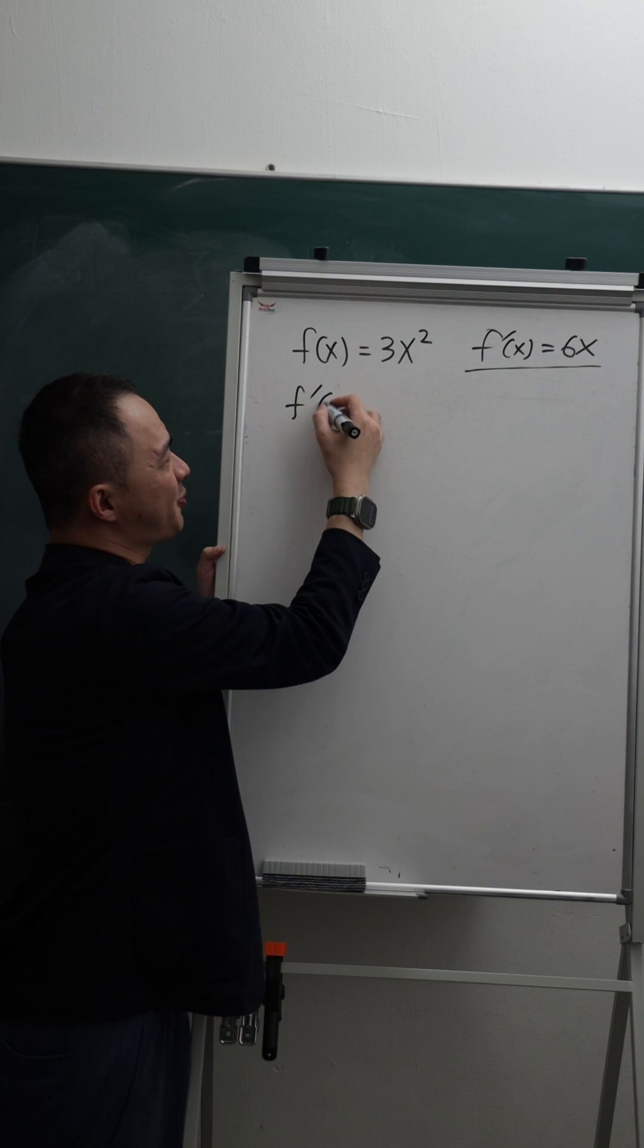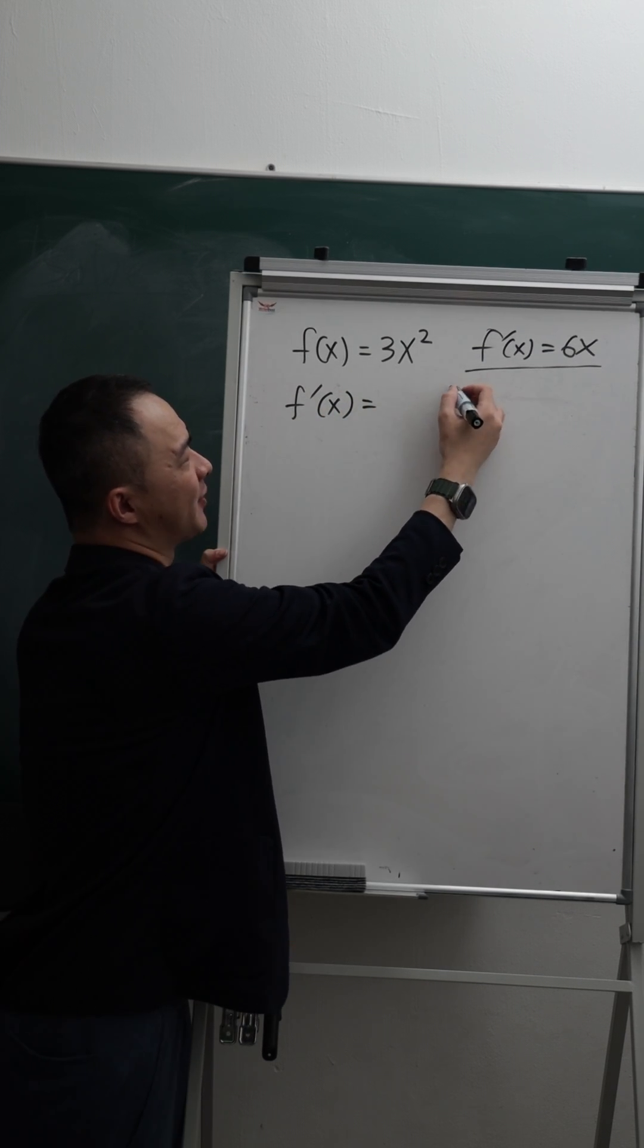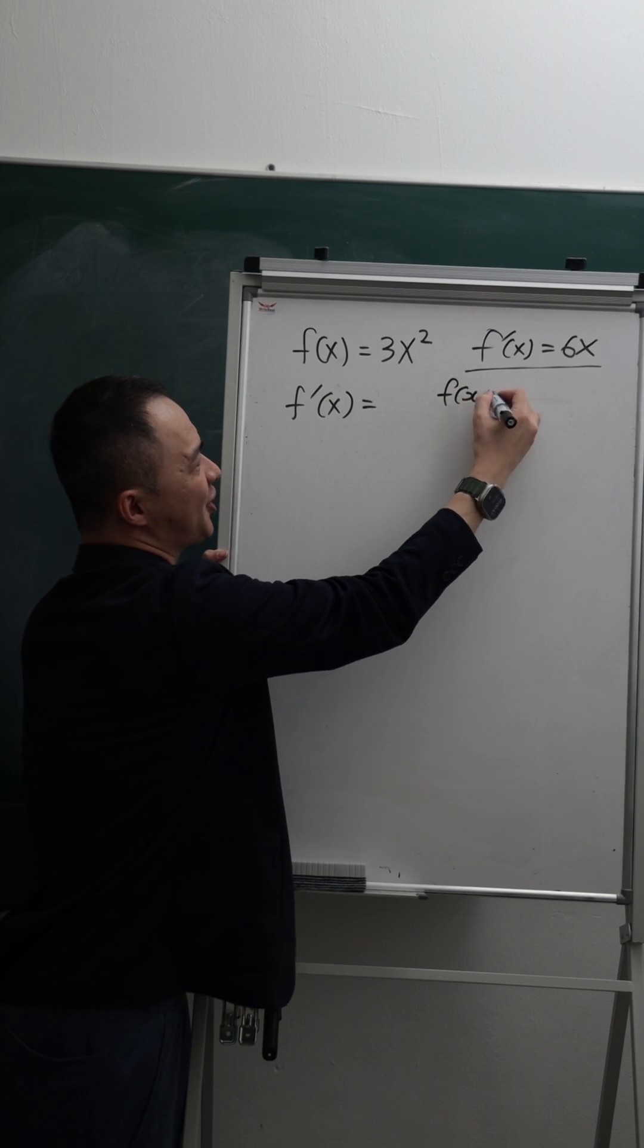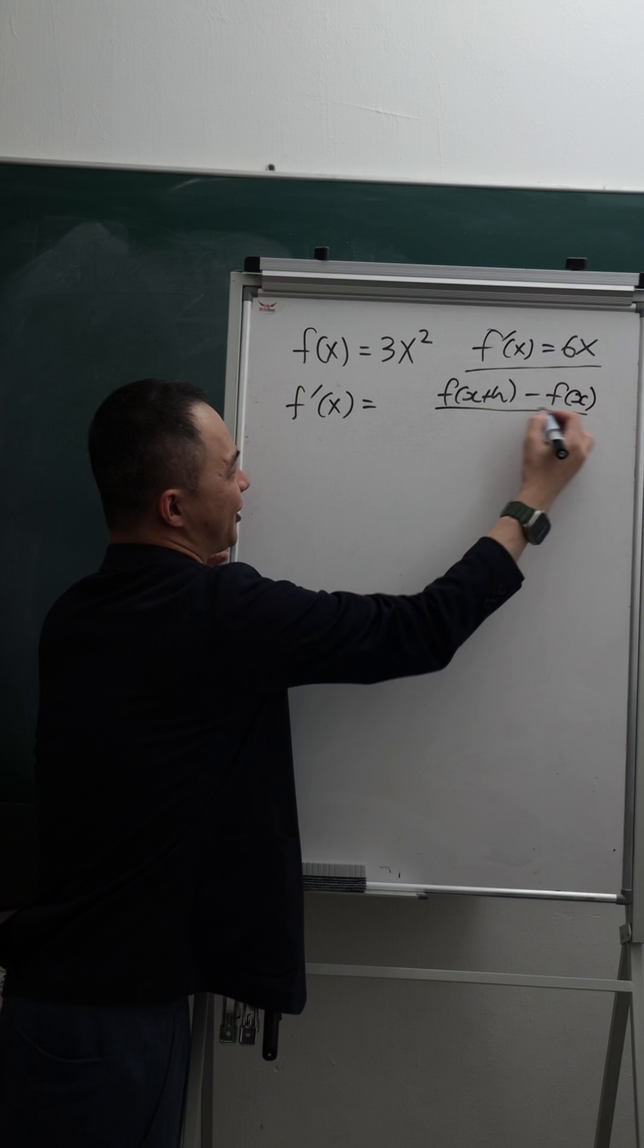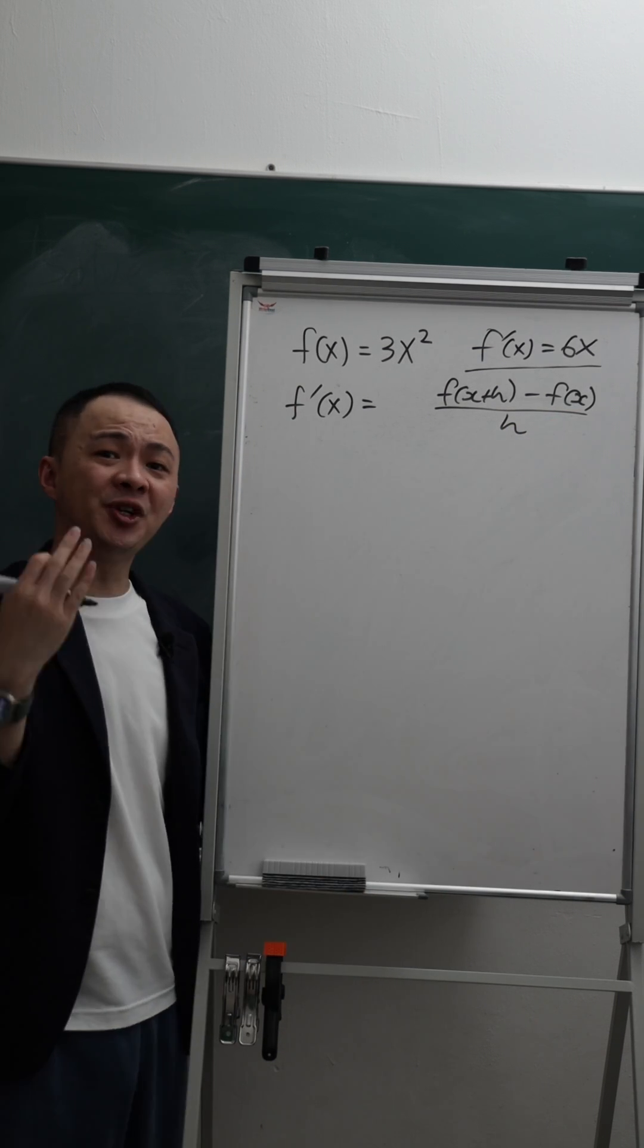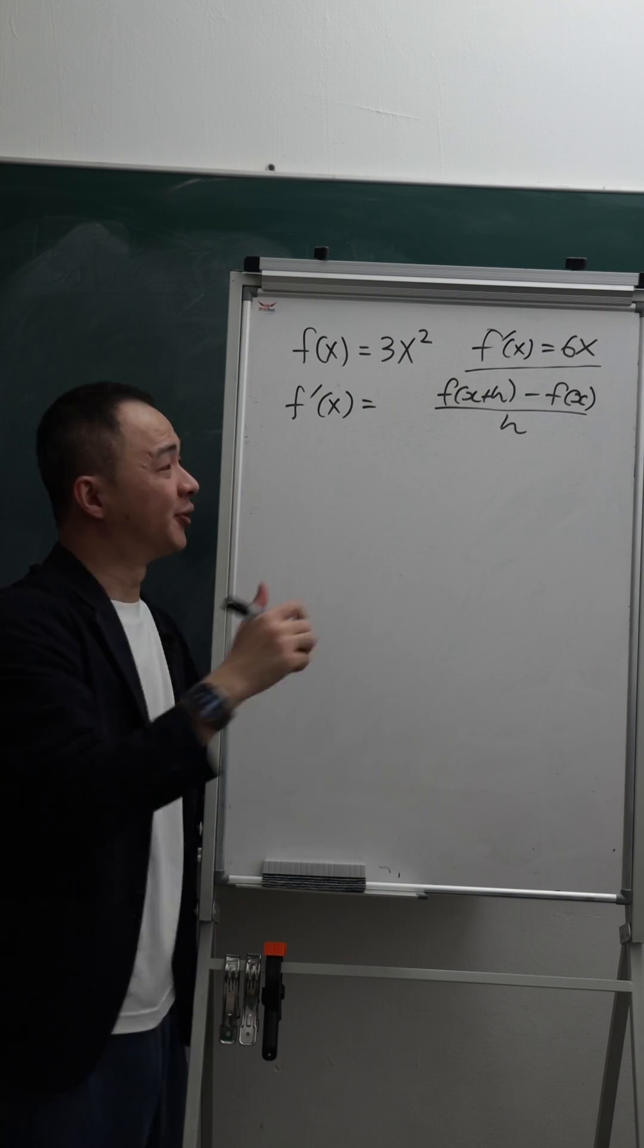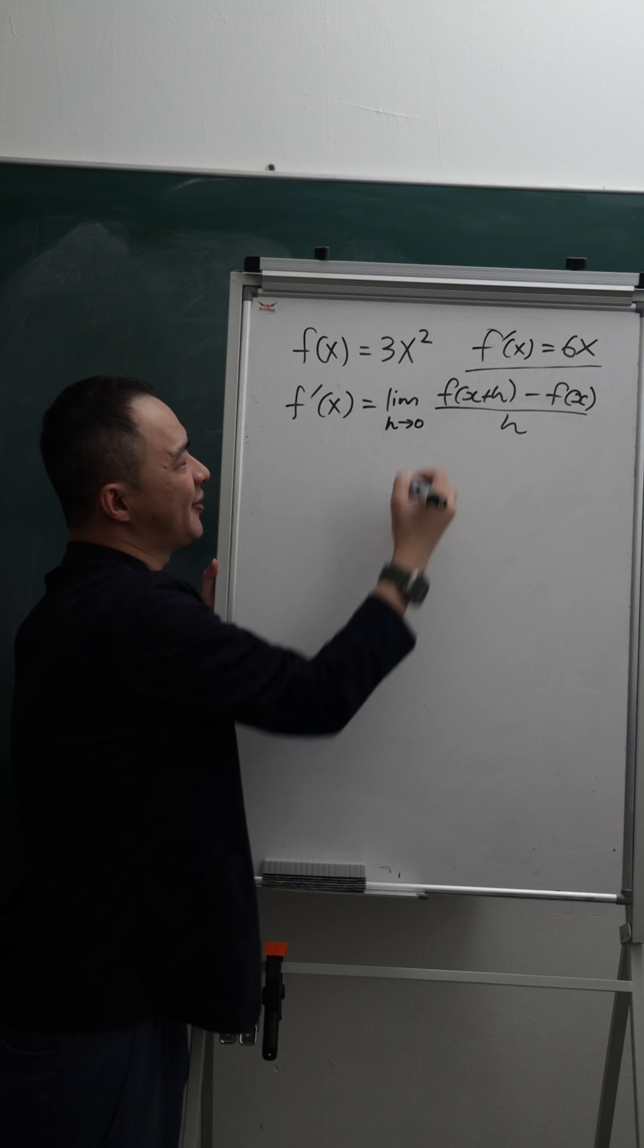First, you need to know the first principle formula. The first principle formula is basically f(x+h) minus f(x) divided by h. And then at the end, you need to add the limit for h, which means you want to make h become 0.